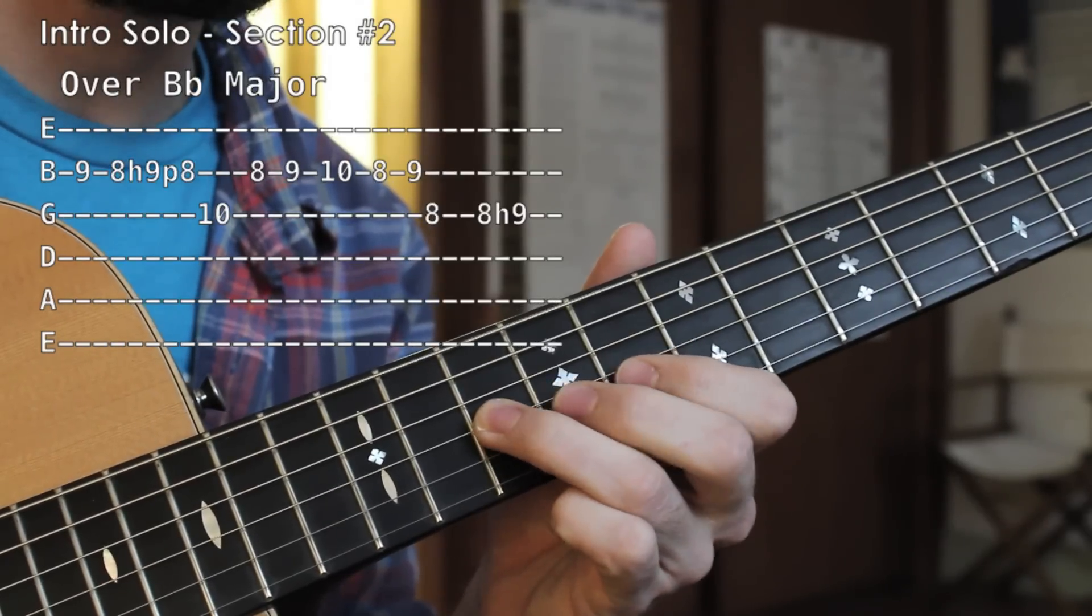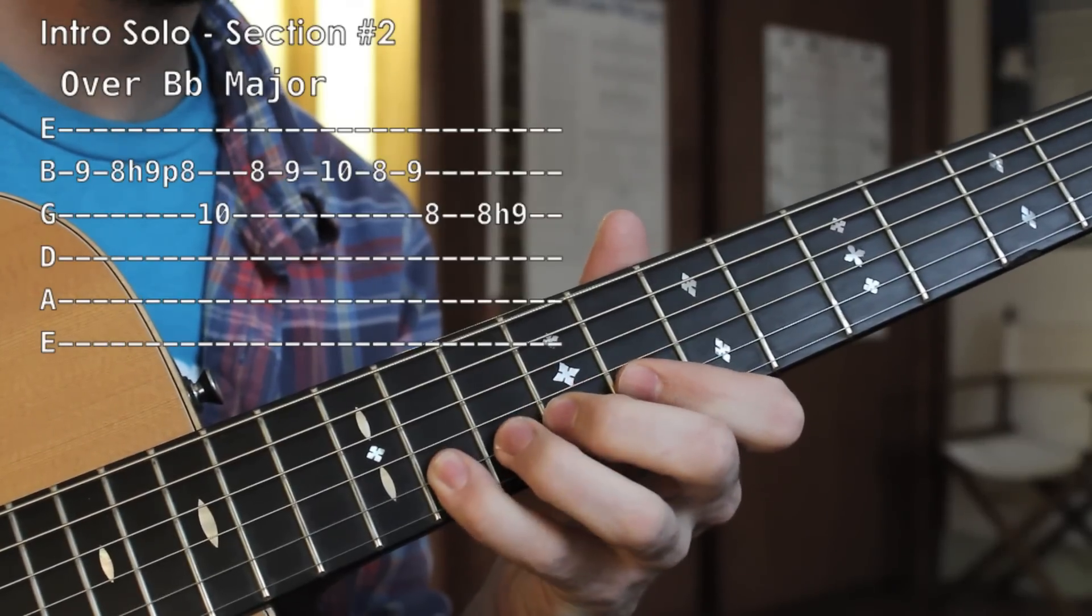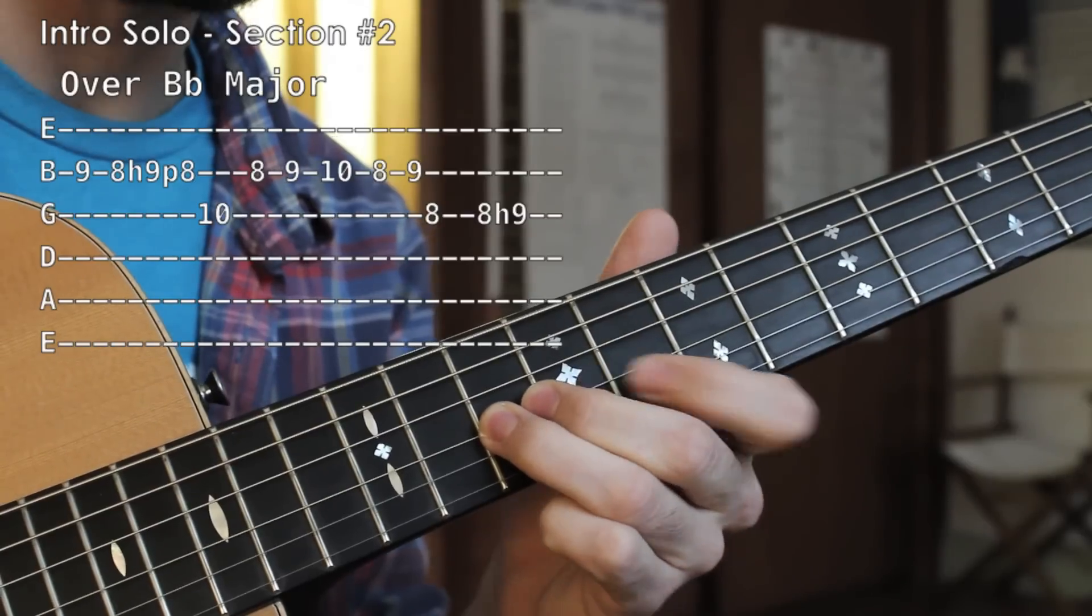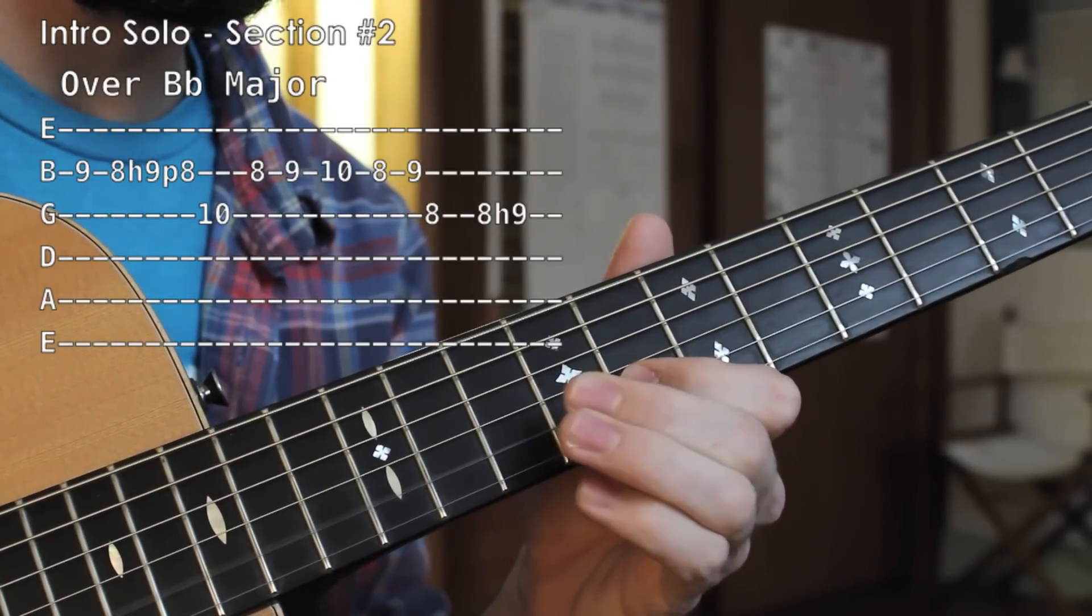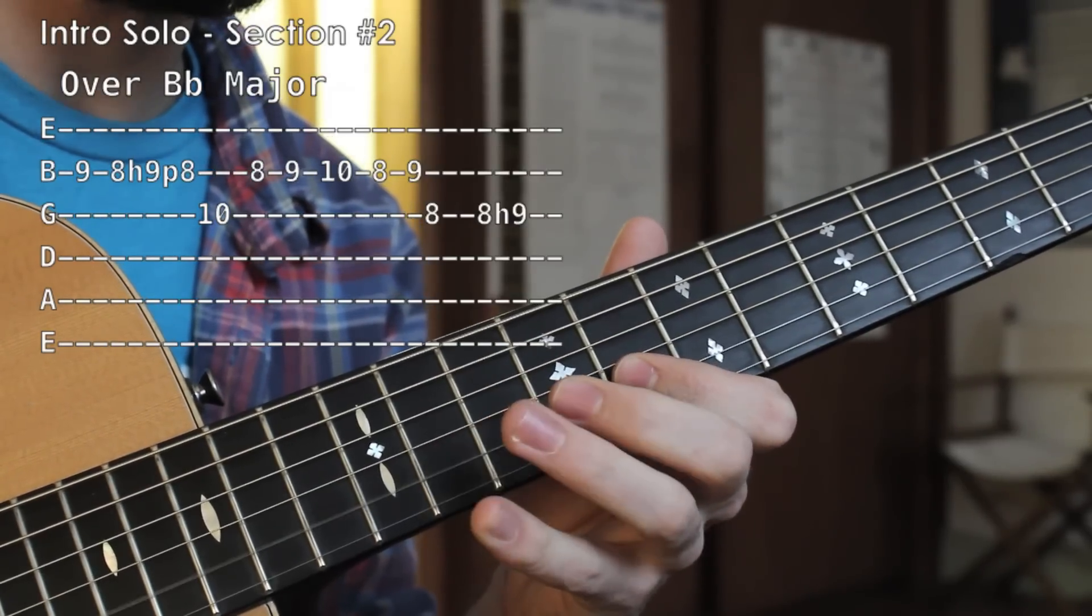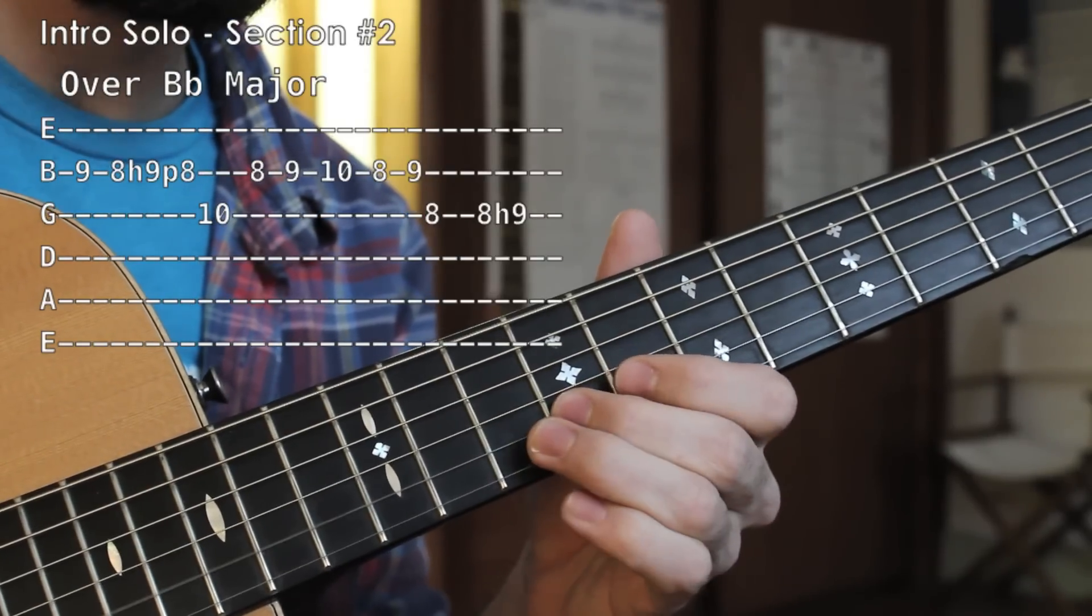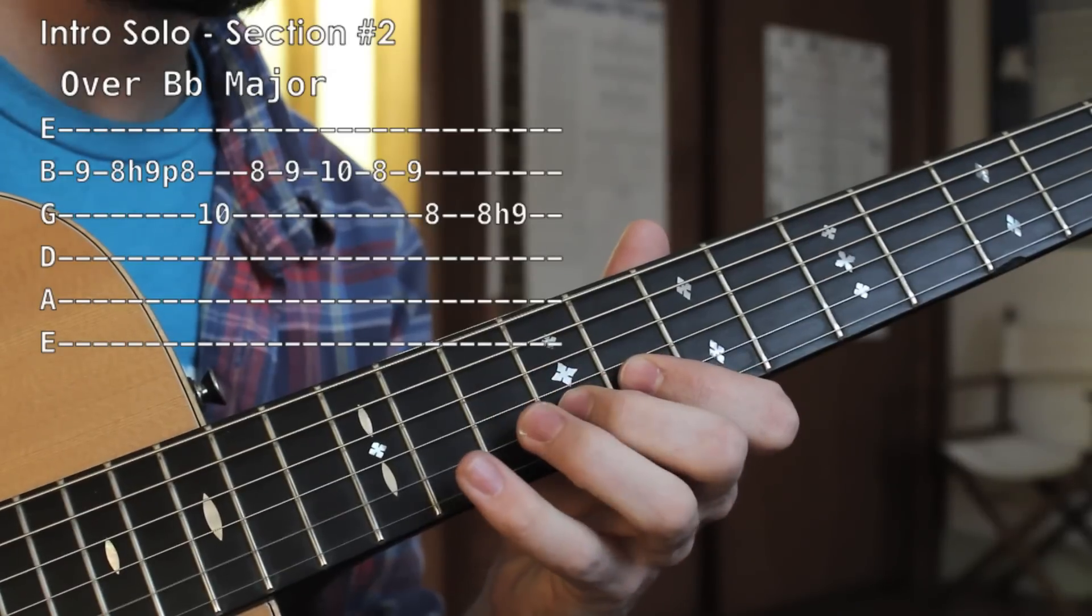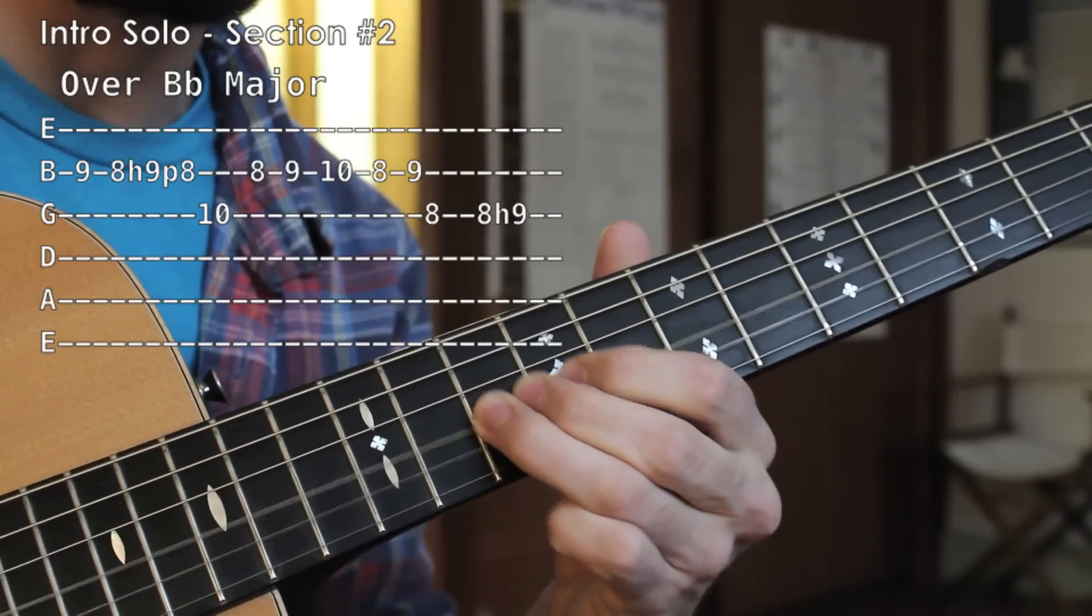So the whole thing will sound like this. One more time with the fret numbers. I got nine, eight, nine, eight, ten. Ten, eight, nine, ten, eight, nine, eight, ten. Nine, hammer, ten, eight, nine, ten, eight, nine, eight, ten. Finishing up there on the G string.